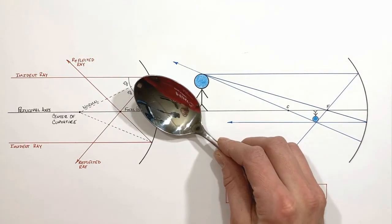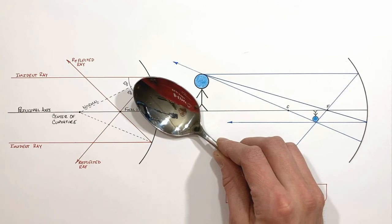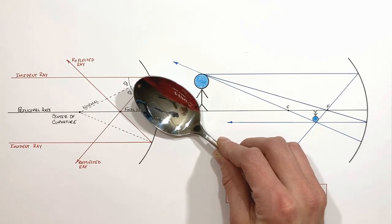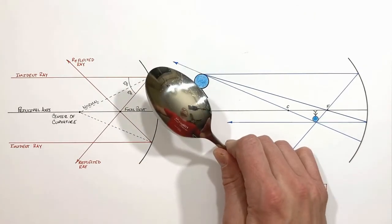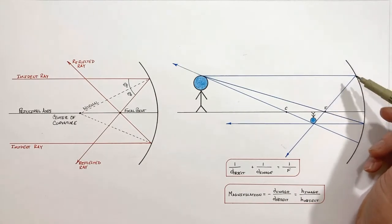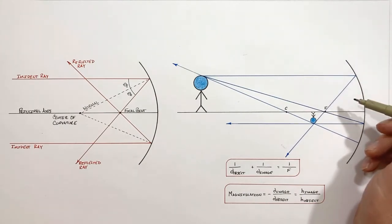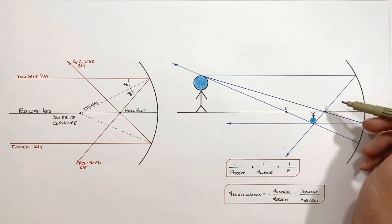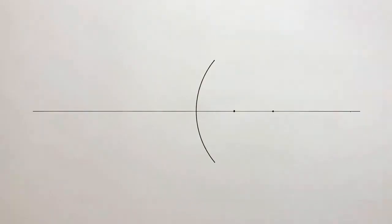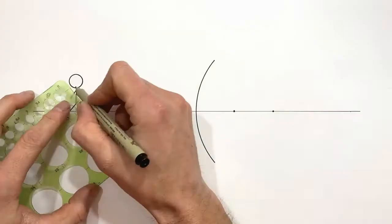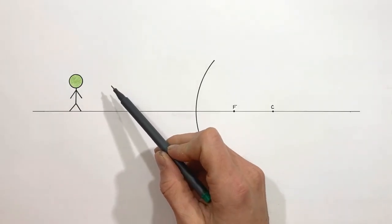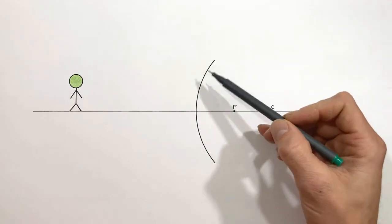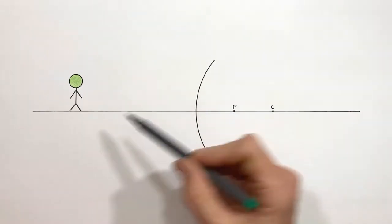Getting back to the spoon — we've seen what you see when looking at the top of a spoon, which is a small inverted reflection of yourself, but we haven't answered why you see something different when you look at your reflection on the back side of the spoon. So instead of looking at a concave mirror like the top of the spoon, let's take a look at what you would see when looking at the bottom of the spoon, which is a convex mirror. Even though we're dealing with a different type of mirror, we're going to follow the same exact process to determine the location of the image which will form in this mirror.